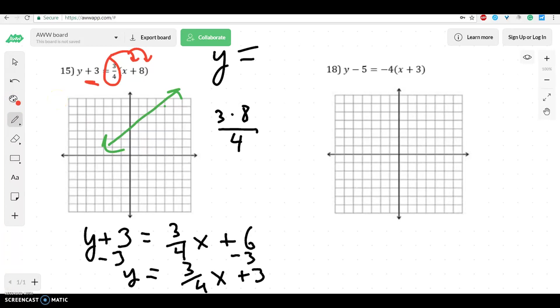Let's look at this one. Again, it's the same kind of thing. You need to distribute. And then you have that 5 that needs to be moved over. So we'll have y minus 5 is equal to negative 4x minus 12. I would add 5 to both sides. When I do that, I'd get y equals negative 4x minus 7.